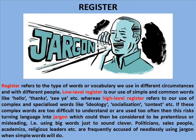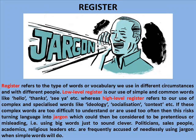Register refers to the types of words and vocabulary we use in different circumstances and with different people. Low level register is our use of simple and common words like 'hello', 'thanks', 'see ya'. Whereas high level register refers to our use of complex and specialised words like 'ideology', 'socialisation', 'context', etc. If these complex words are too difficult to understand or are used too often, then this risks turning language into jargon, which could then be considered pretentious or misleading — i.e., using big words just to sound clever. Politicians, salespeople, academics and religious leaders are frequently accused of needlessly using jargon when simple words will do.